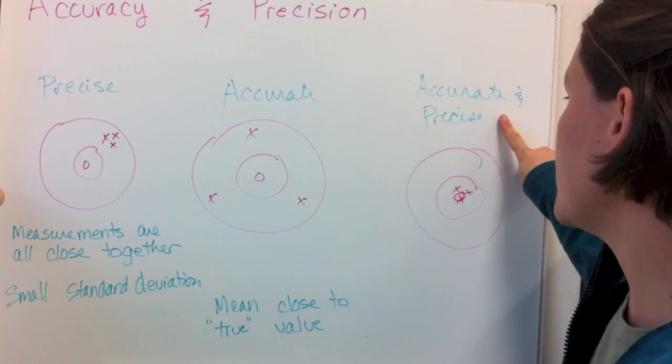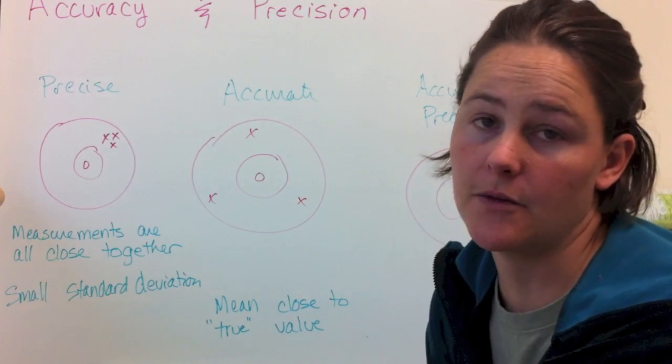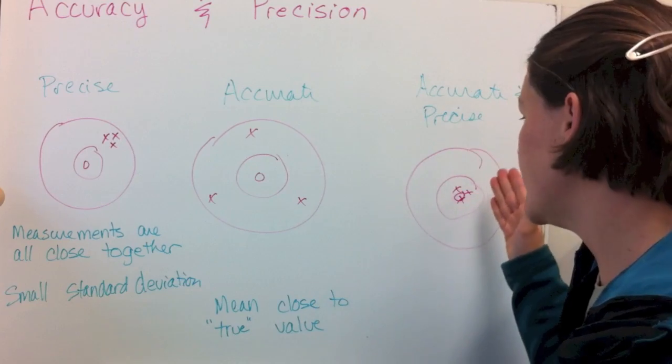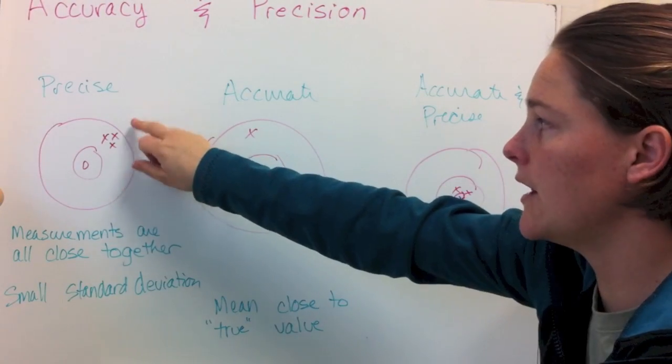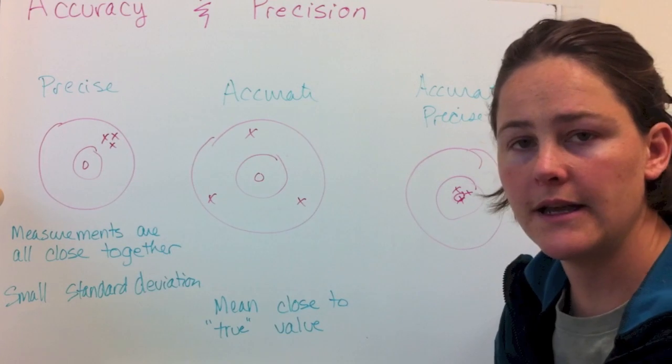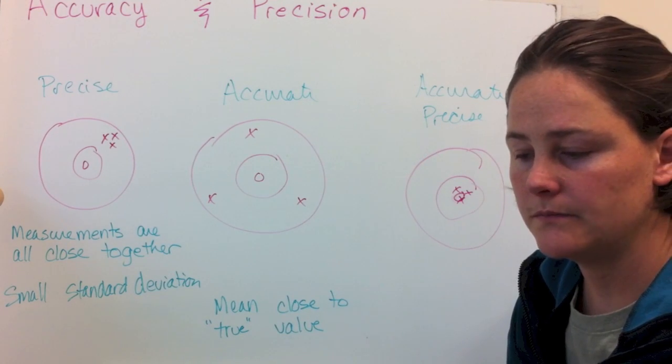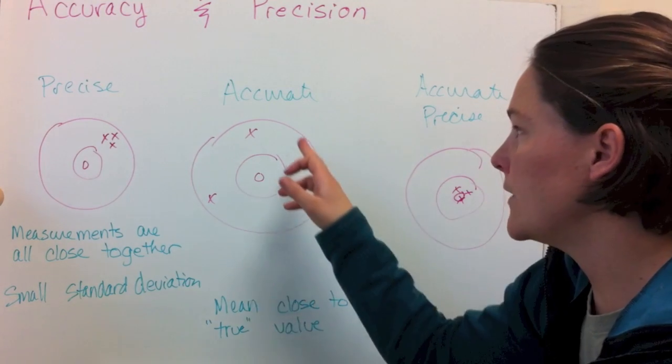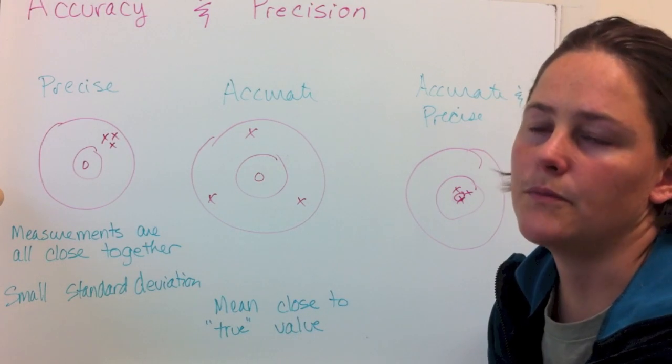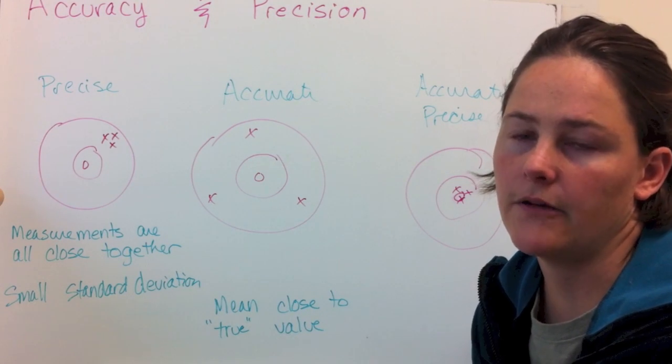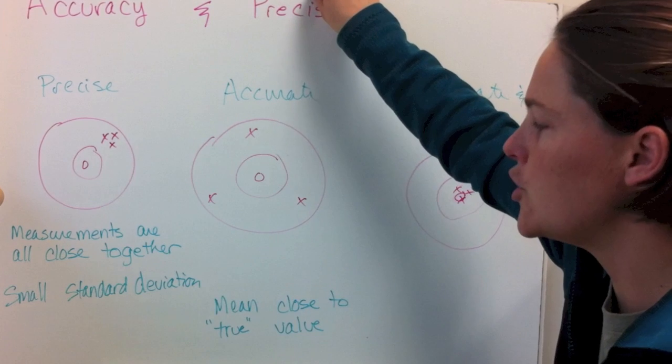But what you ideally would like are both measurements that are both accurate and precise, so always hitting the center of the target. If you are precise but not accurate, that might indicate some systematic error. If you were accurate but not precise, then you would be looking at a random error, generally.